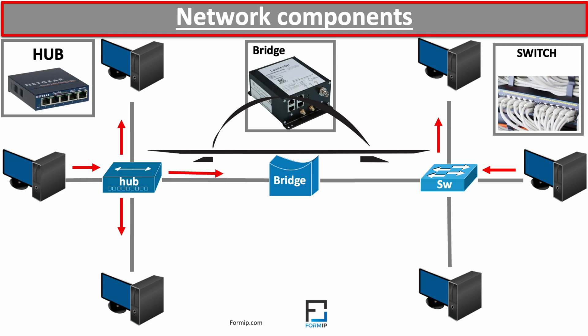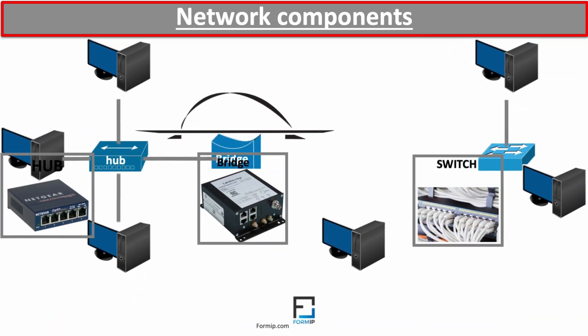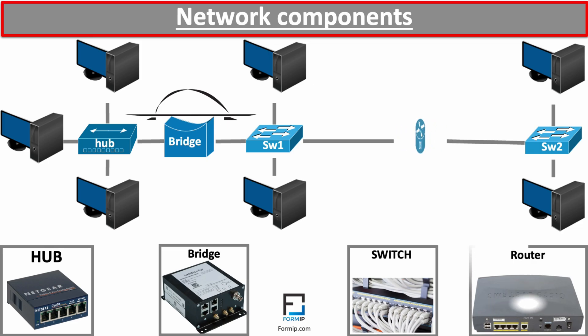A segment is part of a network separated by a piece of equipment such as a hub, a switch, a bridge, or a router. Let's talk about routers. The router does exactly what its name suggests — it routes data. It is a device that routes or transfers data from one network to another based on their IP address. When a data packet is received, the router will inspect the packet to determine if it is destined for its own network or another. We can think of the router as a network gateway.